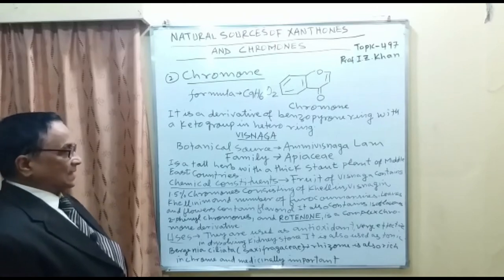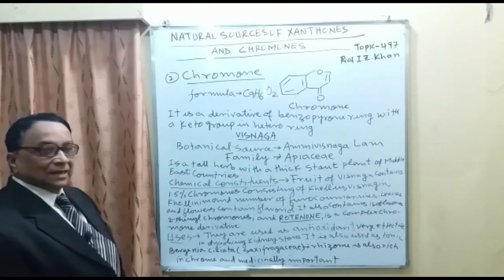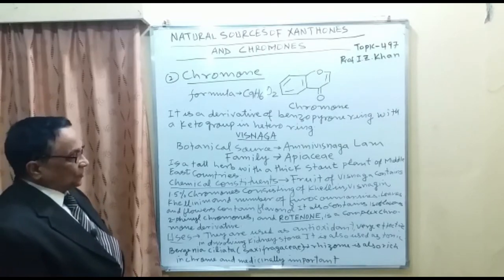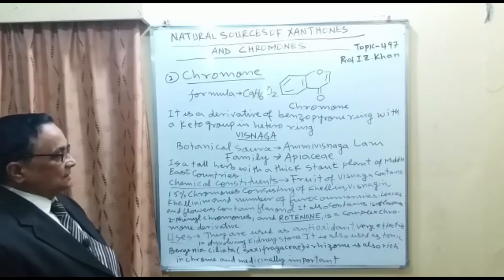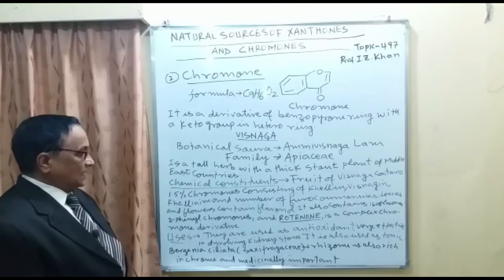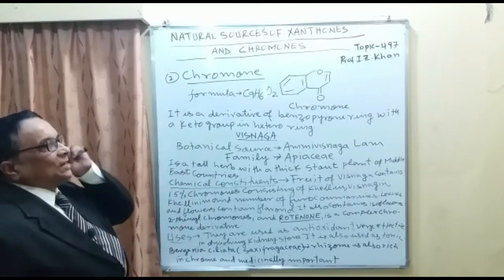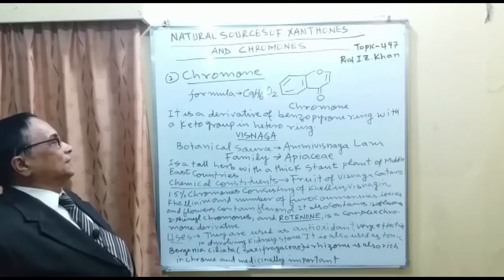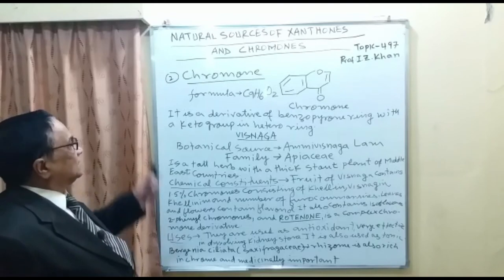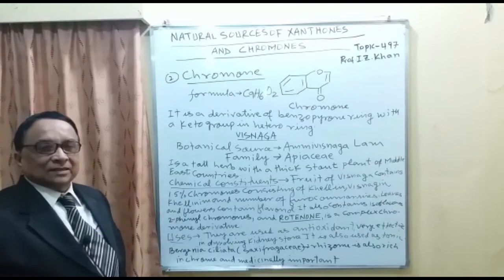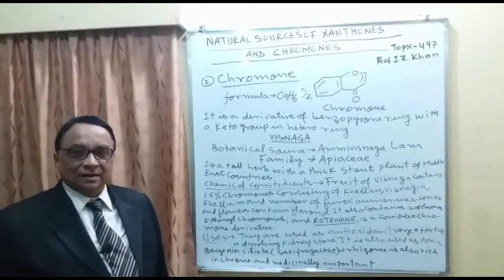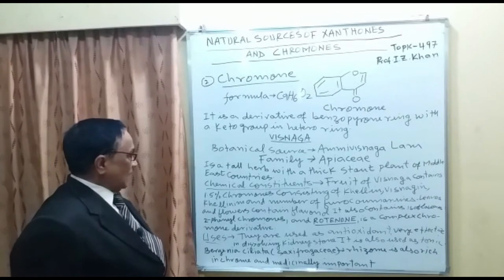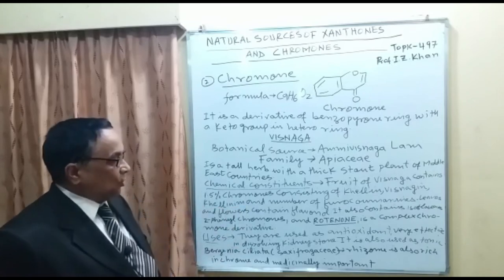The fruit of Visnaga contains 1.5 percent of chromones, consisting of Khellin and Visnagin. The flowers contain Phloronol, which is a yellow pigment derivative. Plants rich in chromone and xanthone are polyphenolic derivatives and sometimes derivatives of flavonoid compounds. Khellin is present along with a number of furanocoumarins.